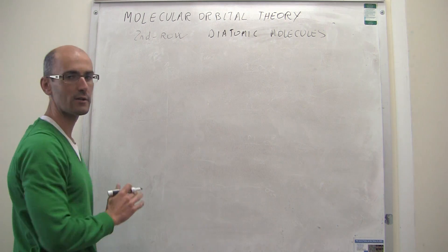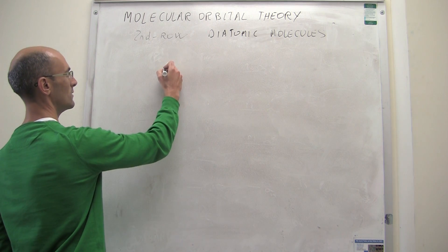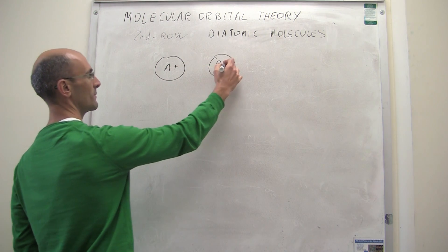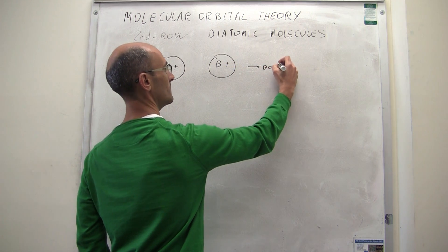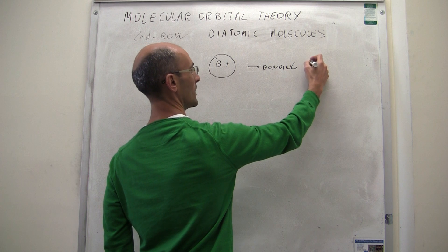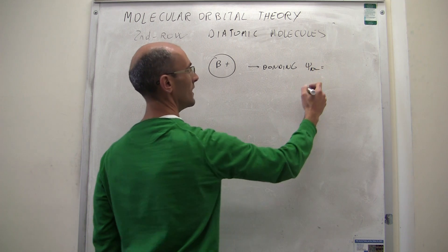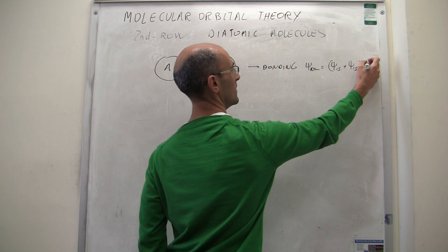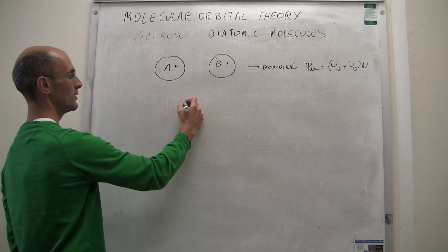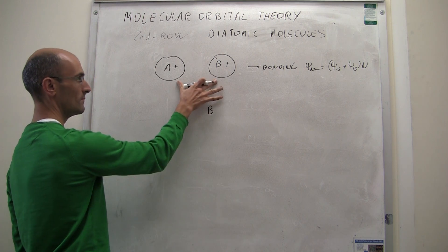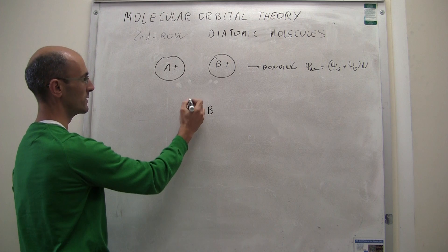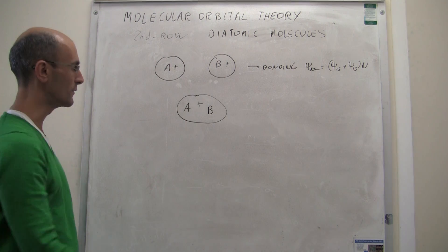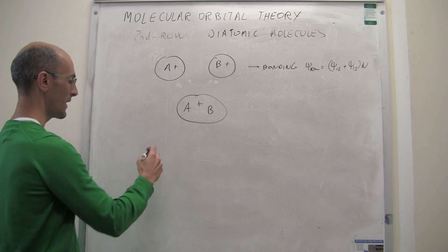To put things in perspective, let me remind you how this works for the s orbitals. This will be your atom A and this will be your atom B, and these are the wave functions, which are generally positive. When you form the bonding combination, the molecular orbital sigma is just going to be the first wave function plus the second wave function, with a normalization constant. The sum of these two wave functions gives constructive interference, producing a wave with a positive sign — clearly a bonding configuration because you have electron density between the atoms.